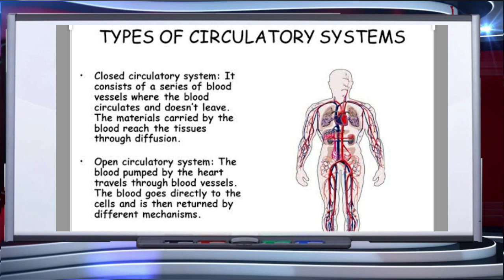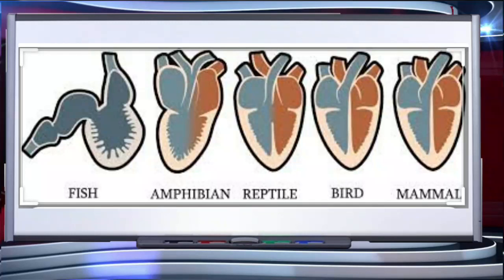All vertebrates possess a muscular chambered structure called the heart. Fishes have a two-chambered heart with an atrium and a ventricle. Amphibians and reptiles, except crocodiles, have a three-chambered heart with two atria and a single ventricle, as shown in this slide. In birds and mammals, the heart is four-chambered with two atria and two ventricles.